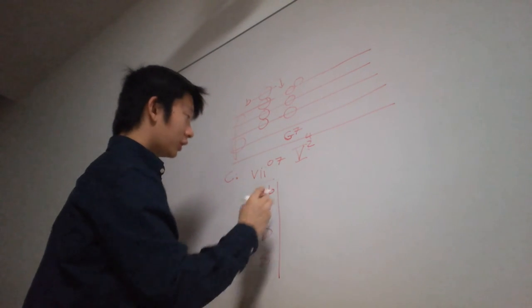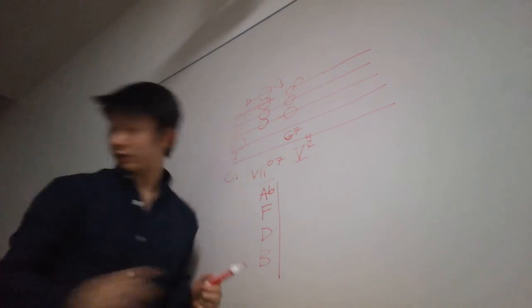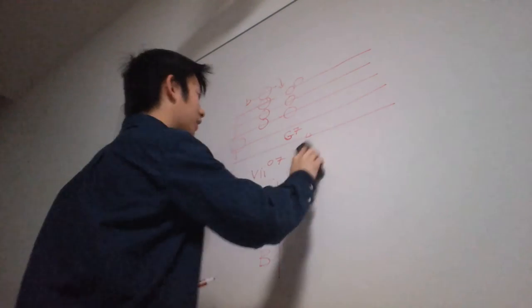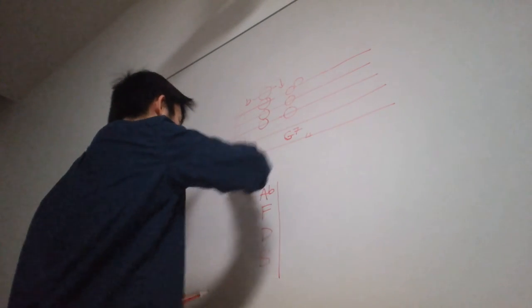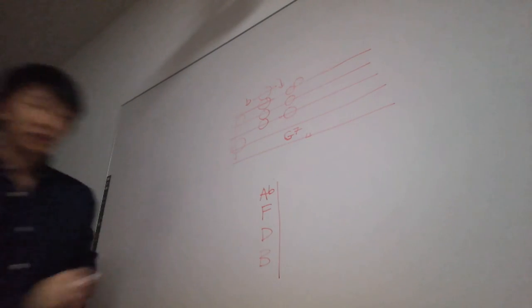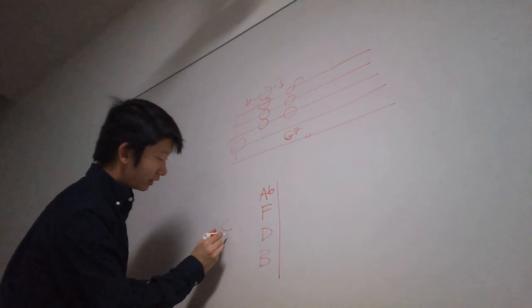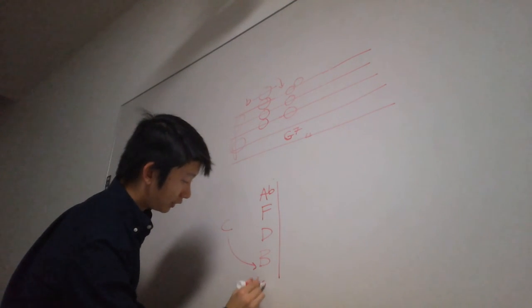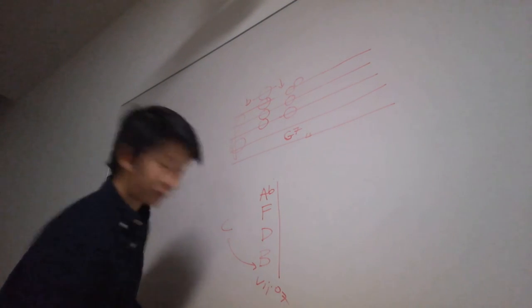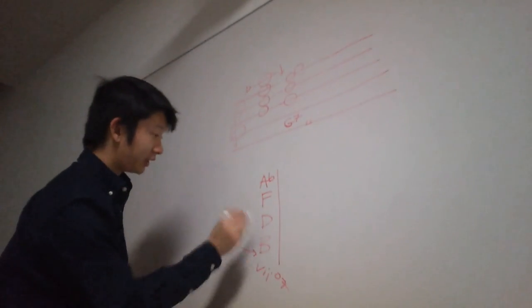We have all of these chord tones. And so the next question to ask is, so again, we're starting with C. And C, the seven chord, the diminished 7 chord, is going to be spelled B, D, F, A flat.